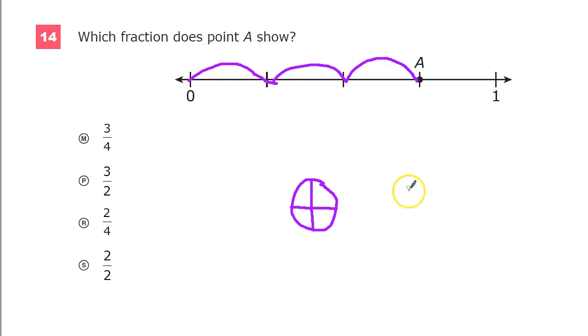So this is 1, 2, 3 of those. So when I do a fraction, the top part is called the numerator. That's the part. And the bottom would be the total parts.